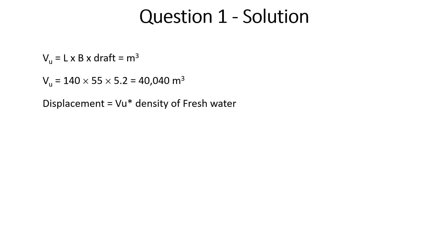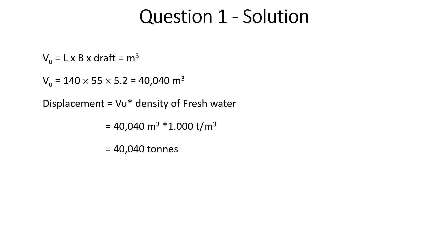Using the fresh water density, we calculate displacement. The vessel is floating in fresh water where density is 1.000 tons per cubic meter, so the displacement is 40,040 × 1.000, giving us 40,040 tons. The cubic meters in the density cancel the cubic meters from the volume.